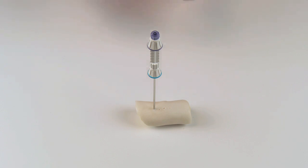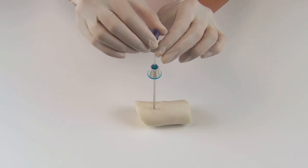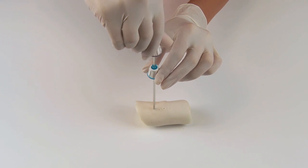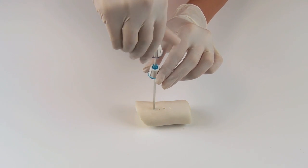Now break off the number of indicators corresponding to the desired length of the sample. Remove the stylet and rotate the biopsy needle clockwise while applying slight downward pressure to the stop.